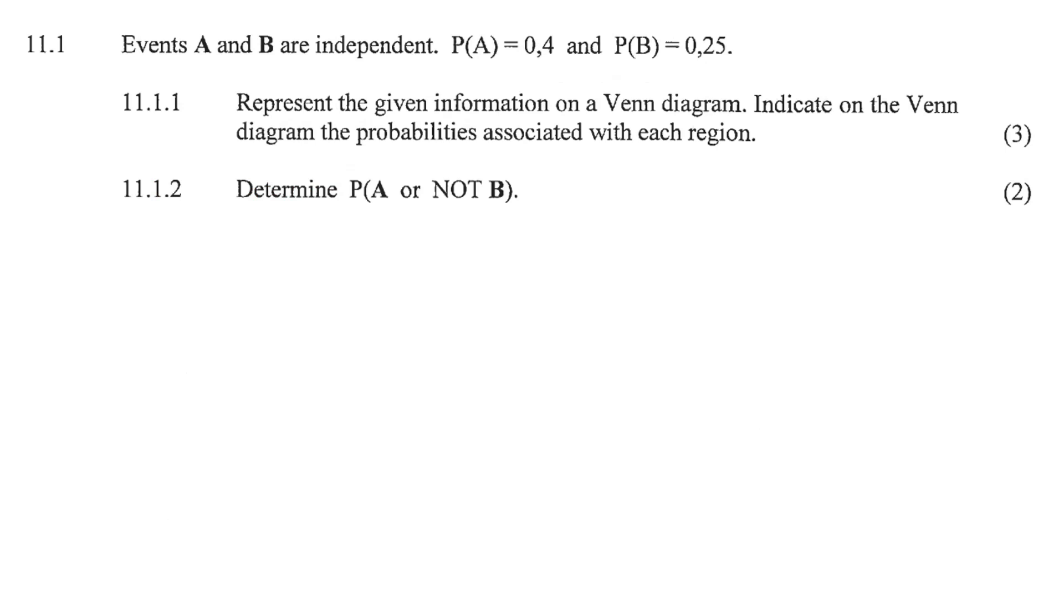Events A and B are independent. Right there is something very important. When two events are independent, then you are allowed to say the following. That is a formula when two events are independent.